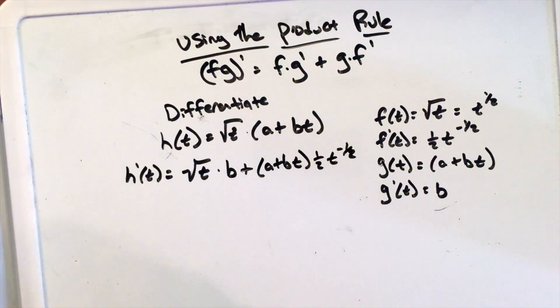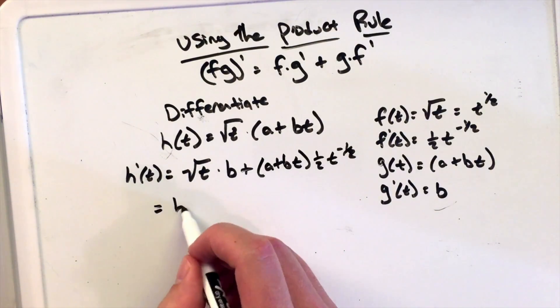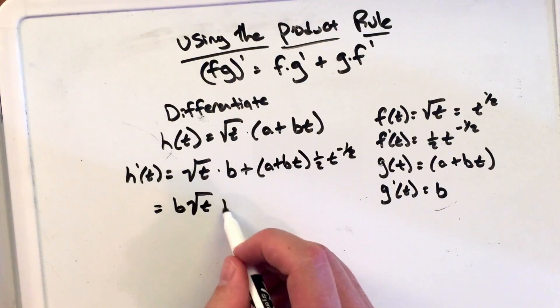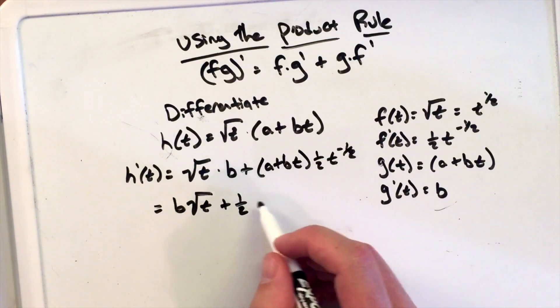Now, if we want to clean this up, keep it all with square roots, because we have square root here, and let's reorganize it. We have b square root of t, plus one-half, I'm putting this one-half out front, and then I have,